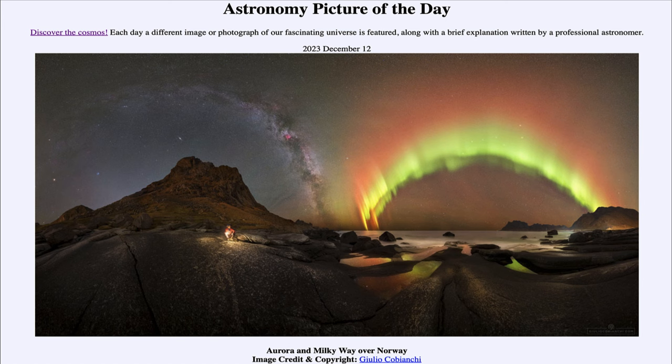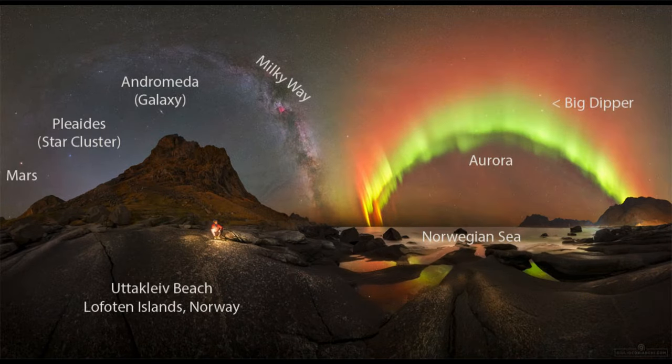Let's go ahead and zoom in and label some of these things to take a better look. We see a number of objects in the sky, including part of Earth in the foreground — that is Norway and the Norwegian Sea off to the right-hand side. You can even see a person sitting there on the rocky outcrops around the Norwegian Sea.